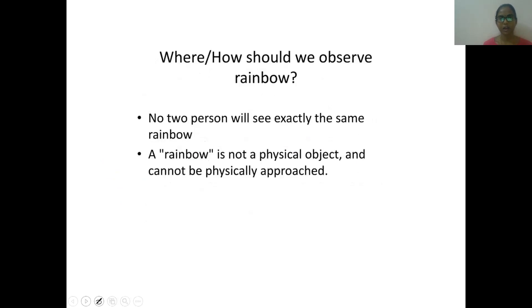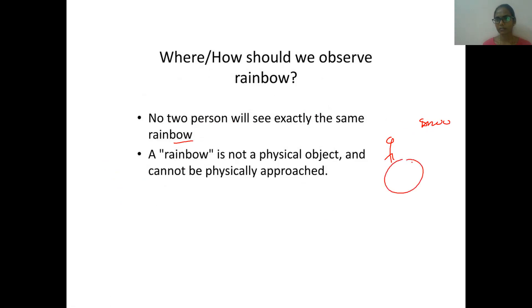Where and how do we observe a rainbow? No two persons will see exactly the same rainbow, because it is based on the viewer's position. From one end of the earth to another end, they will see differently. Which position you are seeing from is what matters — that is why no two persons see exactly the same rainbow. It is based on the observable position.